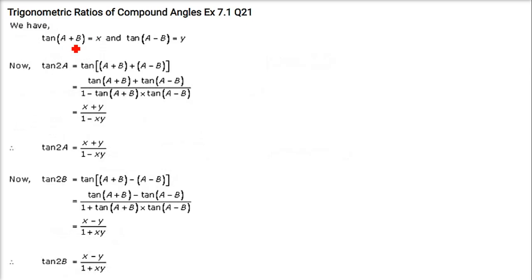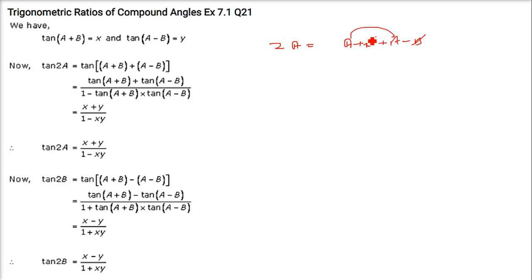Now, tan(a + b) = x and tan(a − b) = y. We have to prove that tan(2a) = (x + y)/(1 − xy). So, tan(2a): 2a can be written as (a + b) + (a − b), since b cancels to give 2a. Taking (a + b) as θ₁ and (a − b) as θ₂, tan(θ₁ + θ₂) = (tan θ₁ + tan θ₂)/(1 − tan θ₁·tan θ₂). Write x in place of tan(a + b) and y in place of tan(a − b).